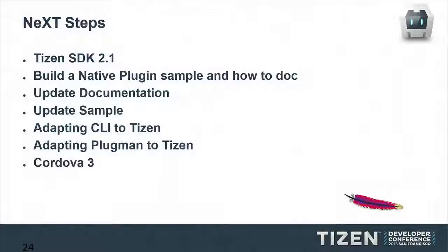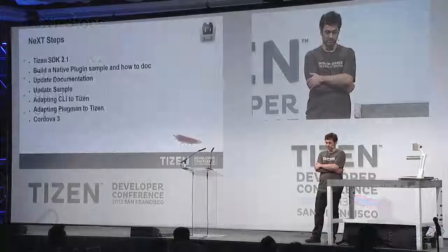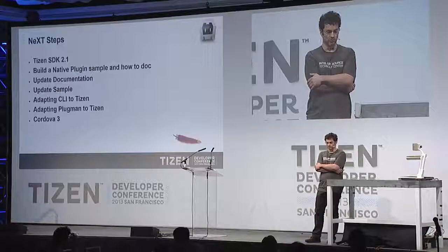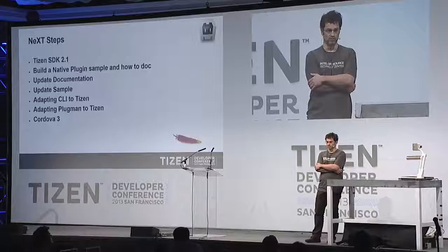The next steps are to support Tizen SDK 2.1, build a native plugin sample using NPAPI and NP-Runtime on Tizen, and possibly use message port for communication with background-only native applications. I also need to update documentation, update samples, adapt the CLI tool to Tizen, adapt the Plugman tool to Tizen, and then integrate Cordova 3. Cordova 3 is about splitting everything into plugins — the Cordova APIs themselves are going to be plugins.